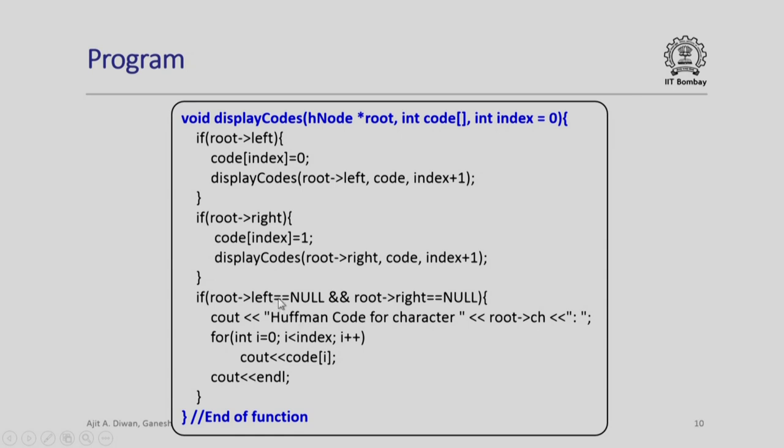If the left pointer is null and right pointer is null, then we now got complete code for that particular character because we have reached the leaf node. We output Huffman code for the character, the character which appears there at root ch.